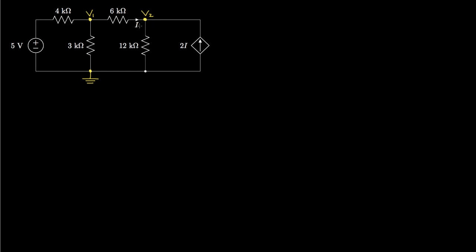We'll notice that the current on which the dependent current source depends can be obtained through Ohm's law. This current is the voltage across the resistor, which is V1 minus V2 — dropping in the direction the current flows — divided by the resistance value, which is 6,000.